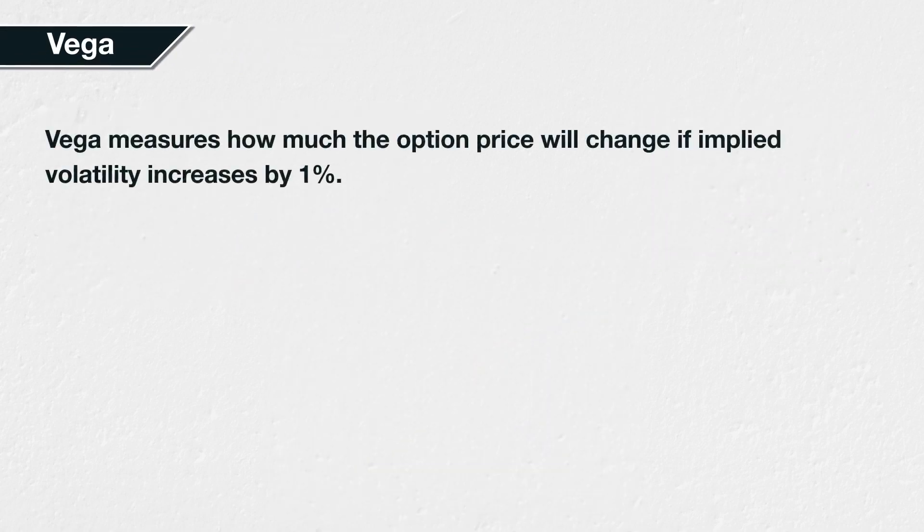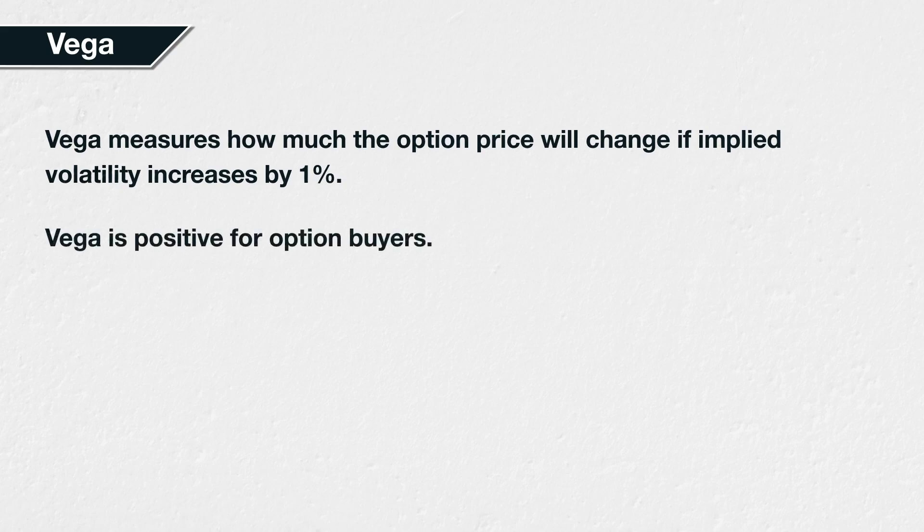Vega is a measure of the option price's sensitivity to changes in implied volatility. More specifically, it tells us how much the option price will change with a 1% increase in implied volatility. Vega is always positive for option buyers, meaning their option will gain value if implied volatility increases.